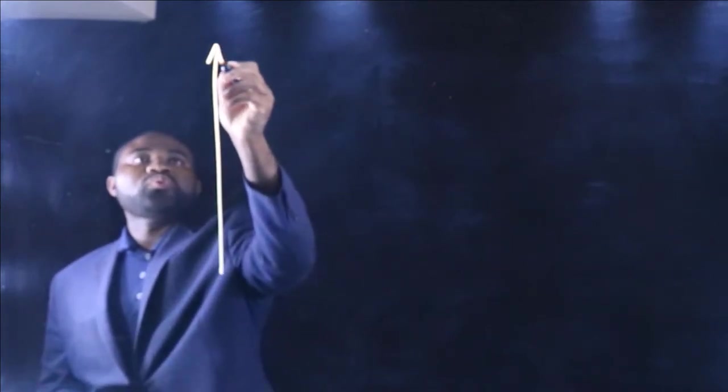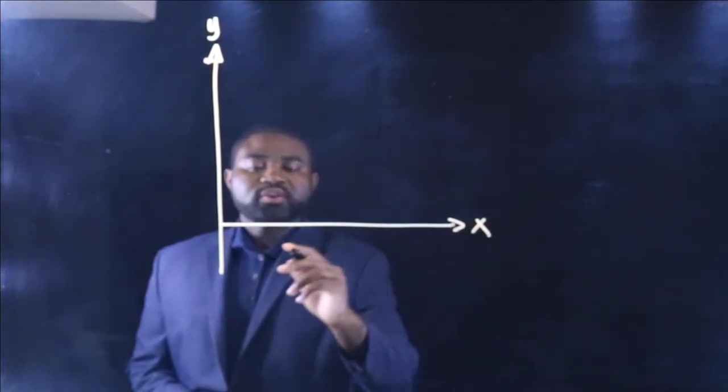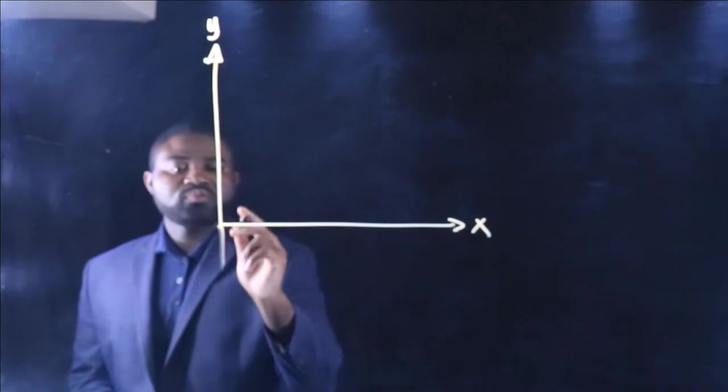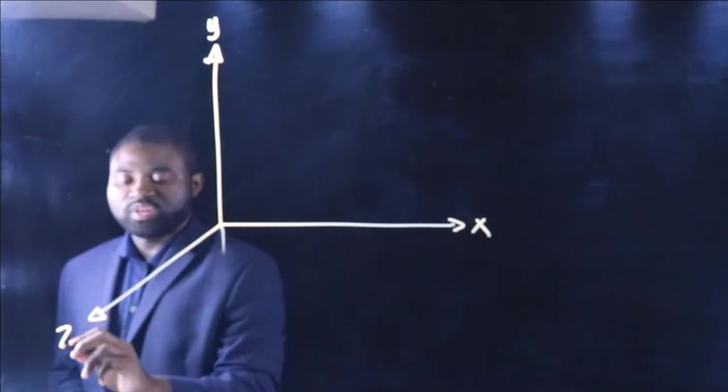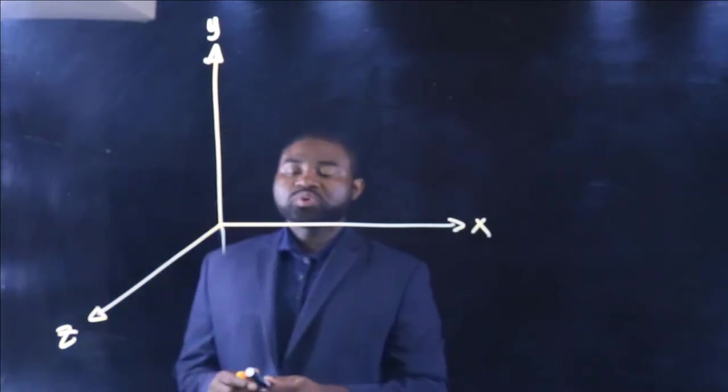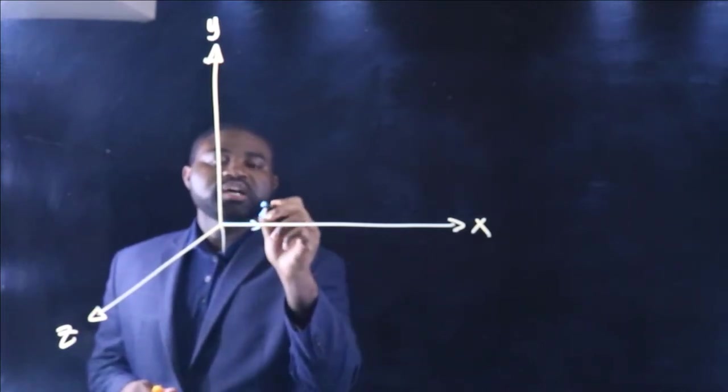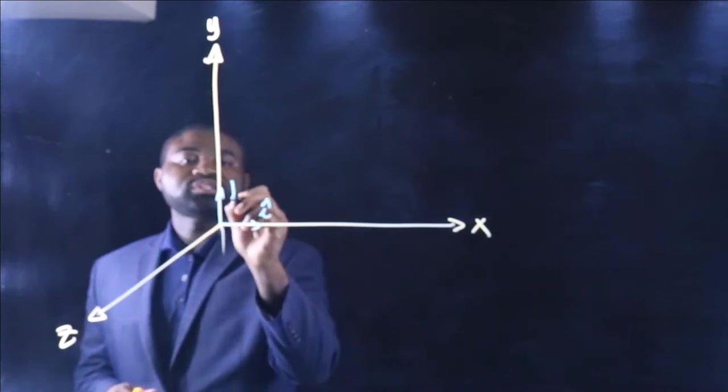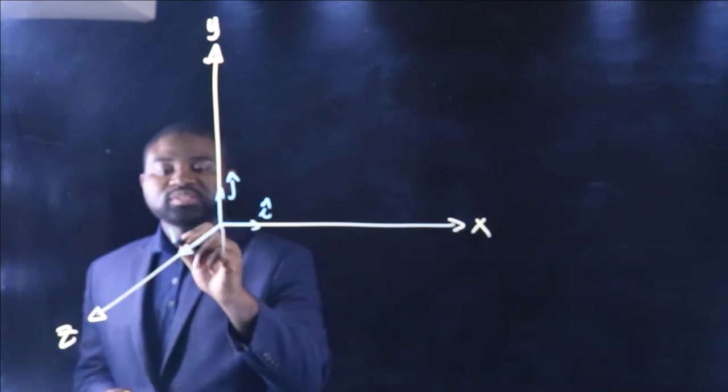The Cartesian coordinate system consists of three axes: the Y, the X, and the Z axis. The unit vector along the X direction is I, the unit vector along the Y direction is J, and the unit vector along the Z direction is K.